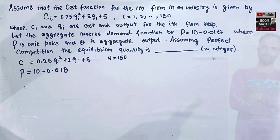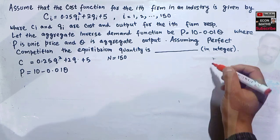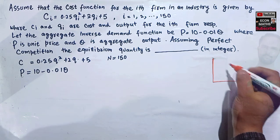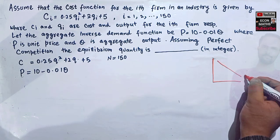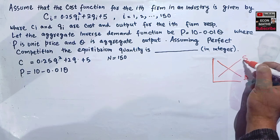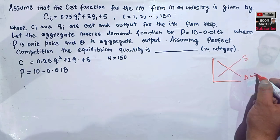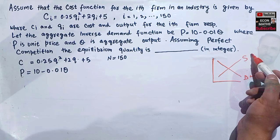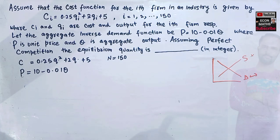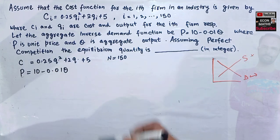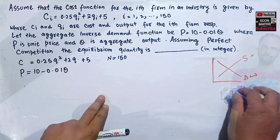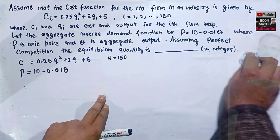Equilibrium quantity can be found when we have both a demand function and a supply function. The demand function is given, but the supply function is not. So first we need to derive the supply function from the cost function — specifically, we will derive the supply curve for the individual firm first.